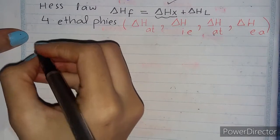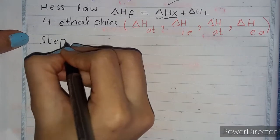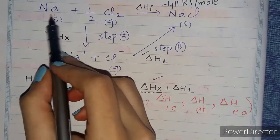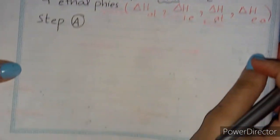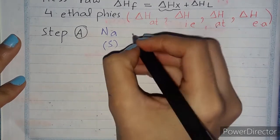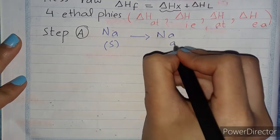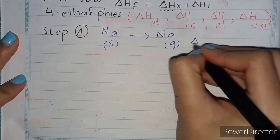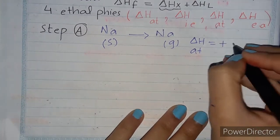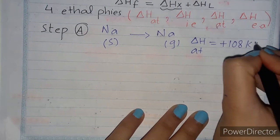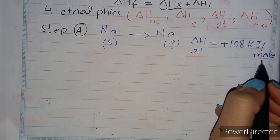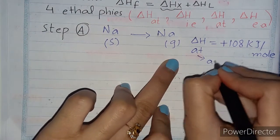Now solving Step A, which includes four enthalpies — four steps. First step: sodium in solid form converts into sodium in gaseous form. Na(s) → Na(g). This is the enthalpy of atomization, which has a value of +108 kJ/mol (endothermic). Always mention the unit per mole.